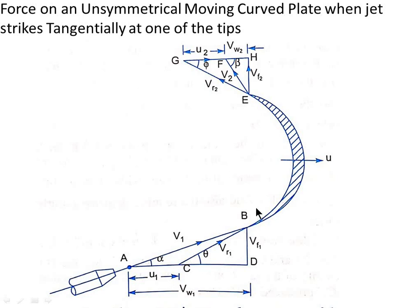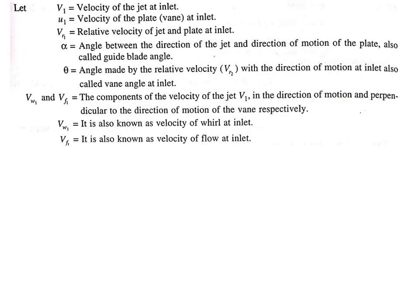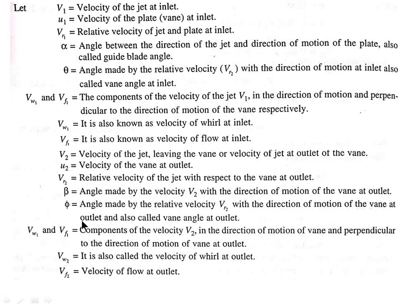The notations used are: V1 is velocity of jet at inlet; U1 is velocity of the plate at inlet; Vr1 is relative velocity of jet and plate at inlet; alpha is the angle between the direction of the jet and direction of motion of the plate, also called guide blade angle; theta is the angle made by the relative velocity with the direction of motion at inlet, also called vane angle; Vw1 and Vf1 are components of velocity V1 in the direction of motion and perpendicular to it, respectively — Vw1 is velocity of whirl at inlet and Vf1 is velocity of flow at inlet.